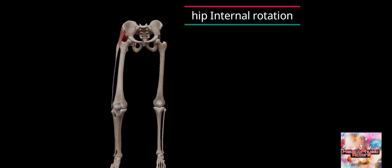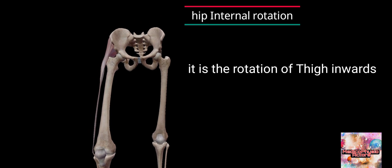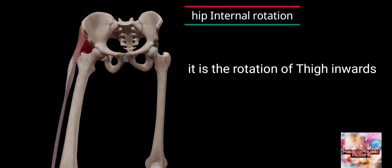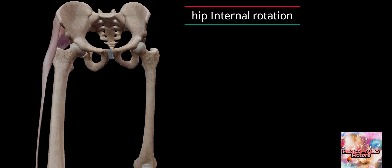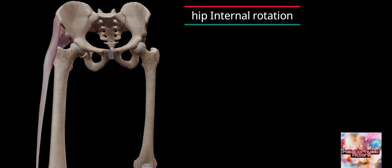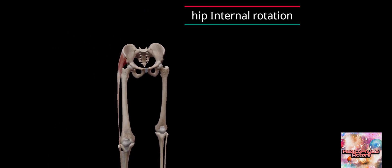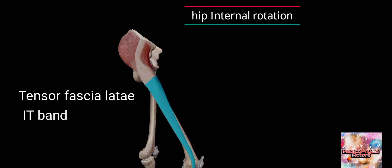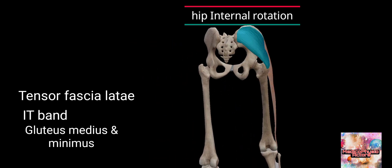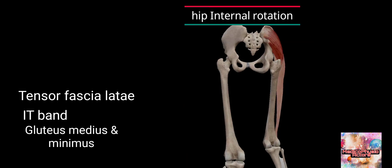Hip internal rotation. It is the rotation of the thigh inwards. The muscles acting are tensor fasciae latae and IT band, and gluteus medius and minimus.